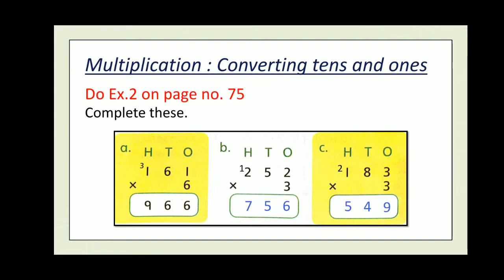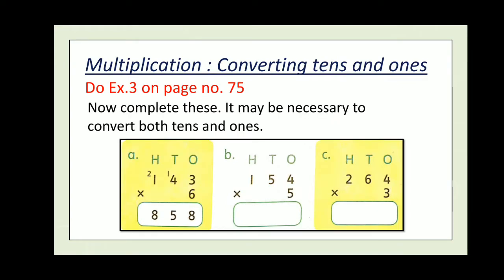And another exercise on this page, exercise 3. Now complete this. It may be necessary to convert both tens and ones. When you multiply 3 by a multiplier 6, the answer comes out to be 18, okay.